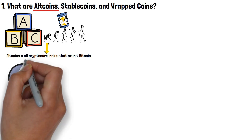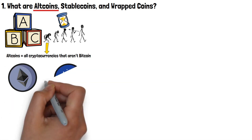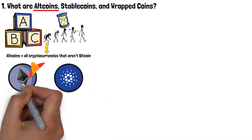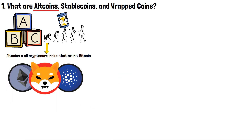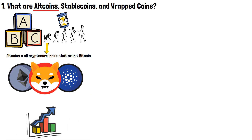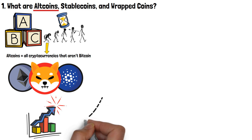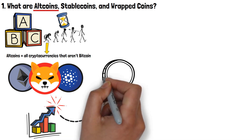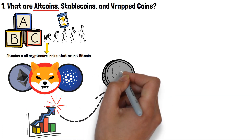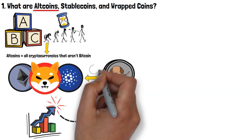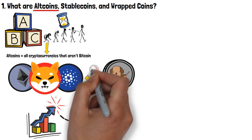So, whether it be Ethereum, Cardano or Shiba Inu, all of these would be called altcoins, since they are not Bitcoin. Simple. With time, however, the cryptocurrency market exploded! There are new coins and tokens coming into the market seemingly every single day.